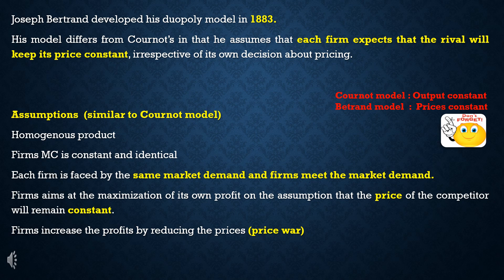There are assumptions about the Cournot model. In the Cournot model, we assume that the firms will keep their output constant — that is the assumption that rivals hold their output decisions fixed. In Bertrand's model, each firm expects that the rival will keep its prices constant. So in Cournot's model the output is assumed constant; in Bertrand's model the prices are assumed constant.